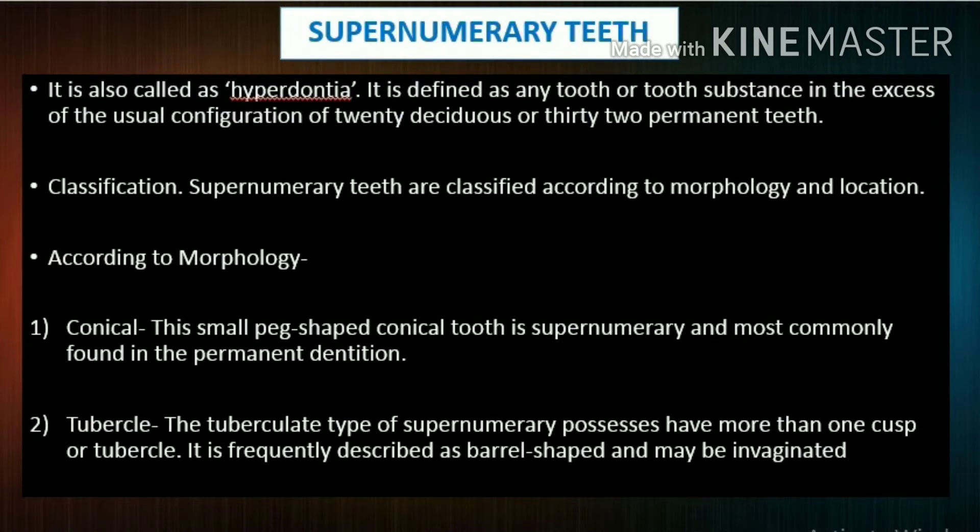Supernumerary teeth are also called hyperdontia. They are defined as any tooth or tooth substance in excess of the usual configuration of 20 deciduous or 32 permanent teeth.